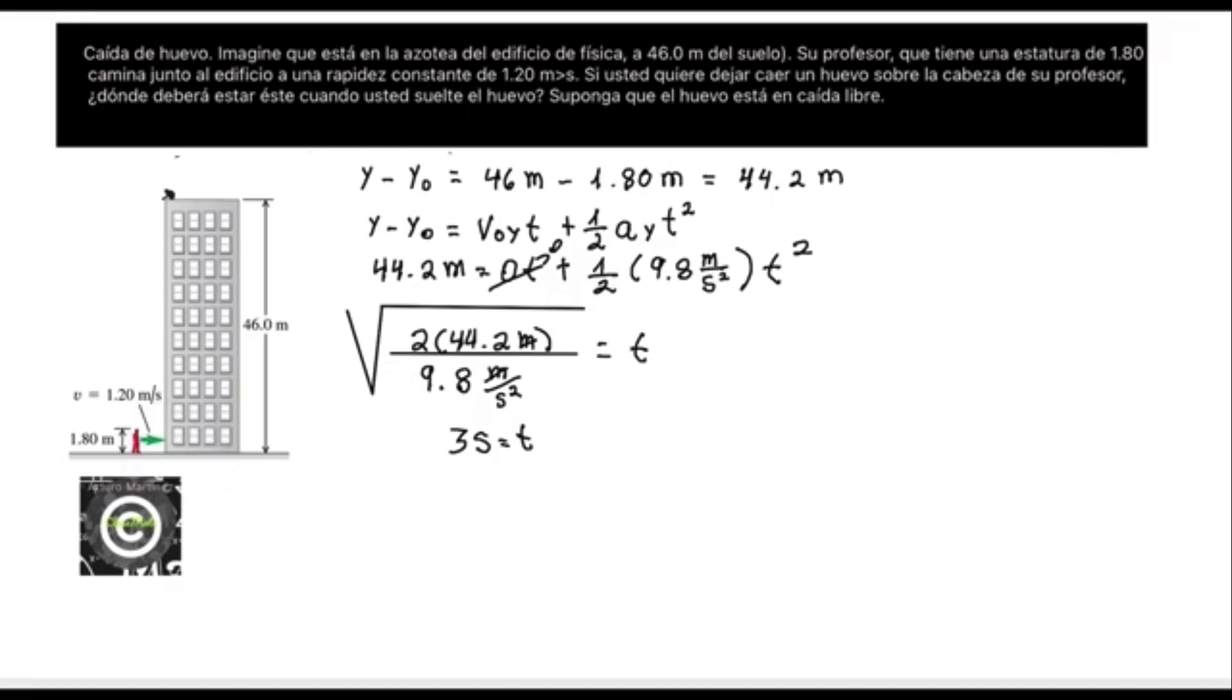So we can find out the distance in x by writing it as follows. We know the speed that the teacher has, which is constant when walking, and also the time that will be three seconds. Then we substitute the data.